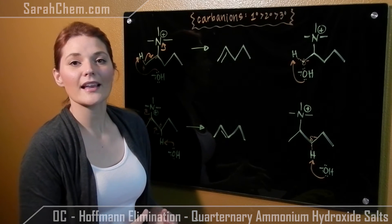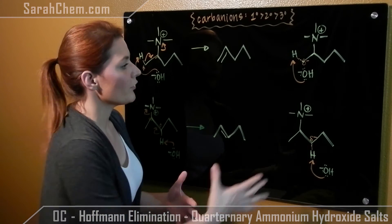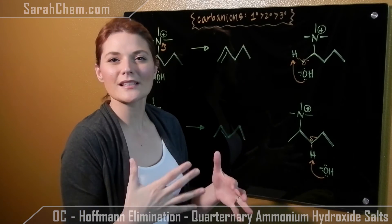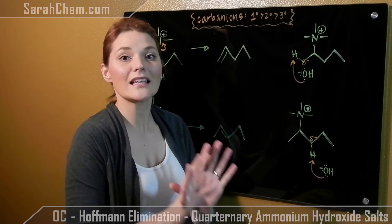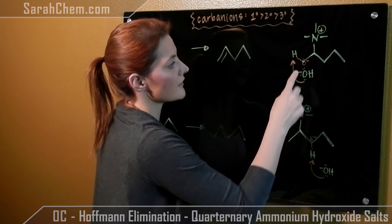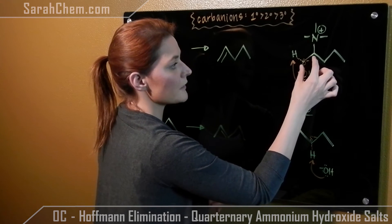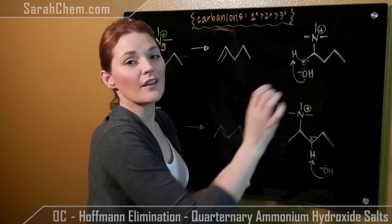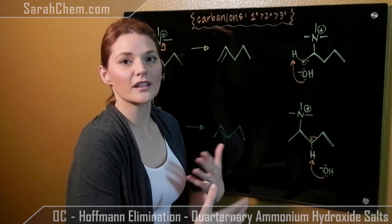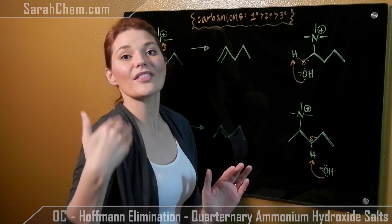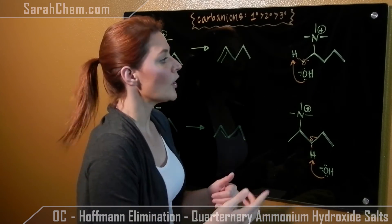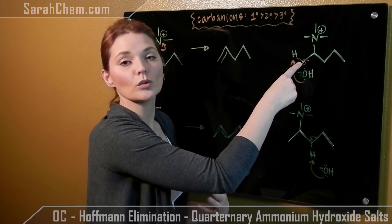So now the issue lies in the transition state. Our hydroxide comes and it takes the hydrogen. Remember when it's taking the hydrogen, the hydrogen leaves the electrons that it once shared with the carbon behind. What would normally happen is those electrons would then be placed between alpha and beta and the group would get kicked off. The issue is that this amine group doesn't want to get kicked off, so it's going to take a little bit of time to get the group removed.